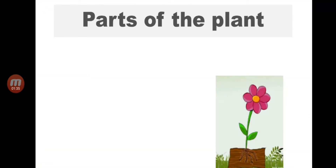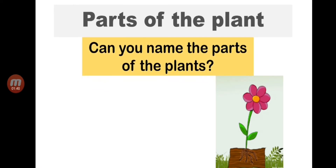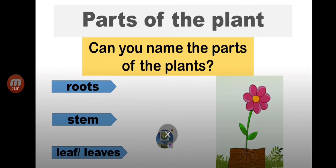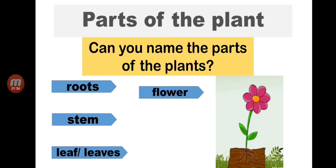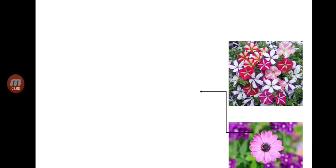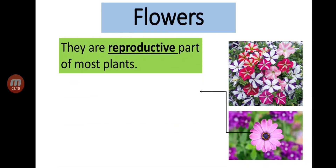Now let's talk about the parts of the plants. Can you name the parts of the plants? The parts are: roots, stem, leaves, flower, fruit, and seeds. All of these are parts of the plants.